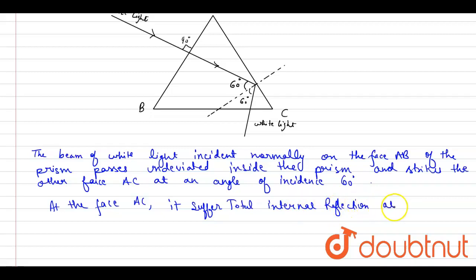At the face AC, so the beam of white light falls normally on the face BC, falls normally on the face BC, on the face, so it emerges out without deviation.